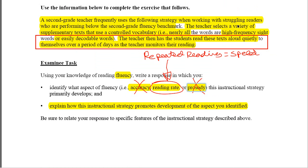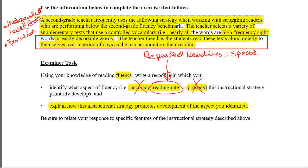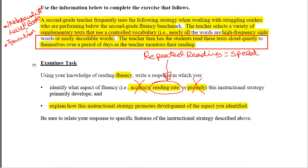There are a couple of other important things here. This activity is a very good one if you're trying to increase a student's fluency, but bear in mind that you always want to pick independent-level books for doing repeated reading. Moreover, the book should be familiar. In this case, the instructor is selecting supplementary texts with a controlled vocabulary, and these books are going to become familiar to the students as they read them over and over again. The books the teacher is selecting are at the student's independent reading level.